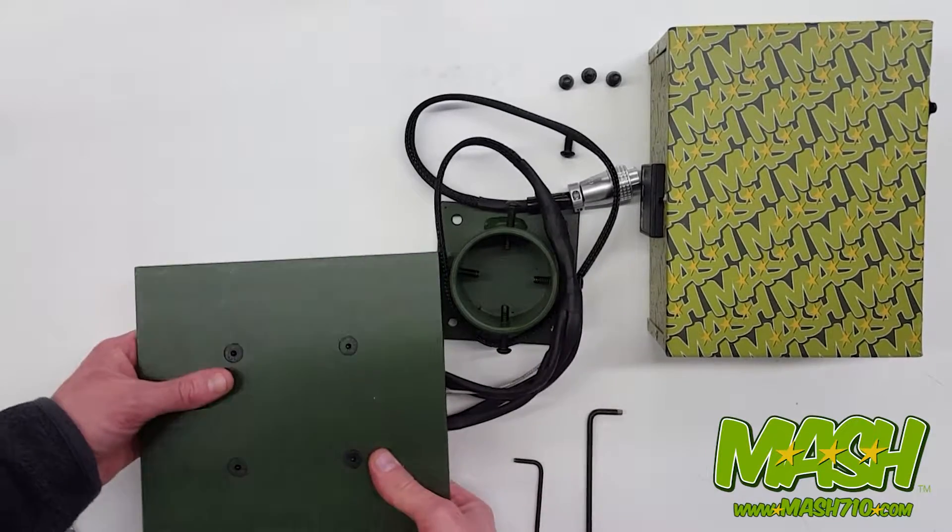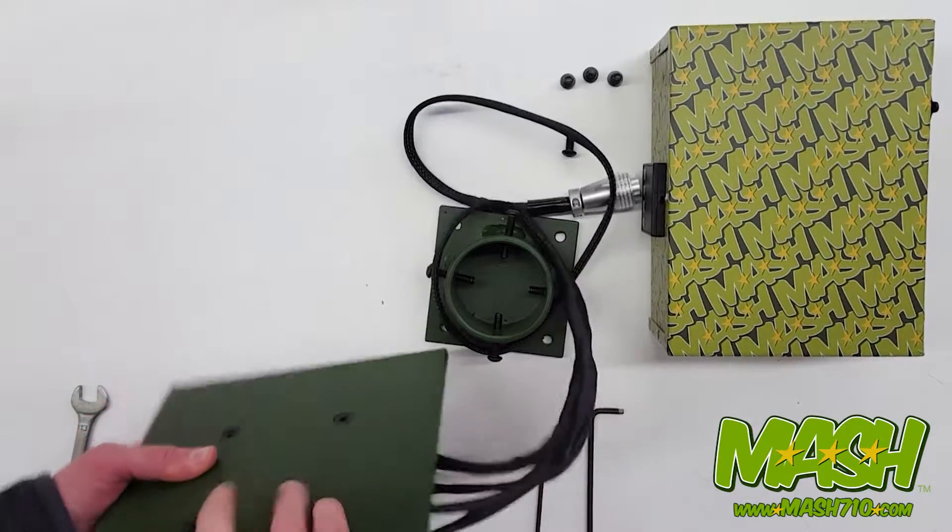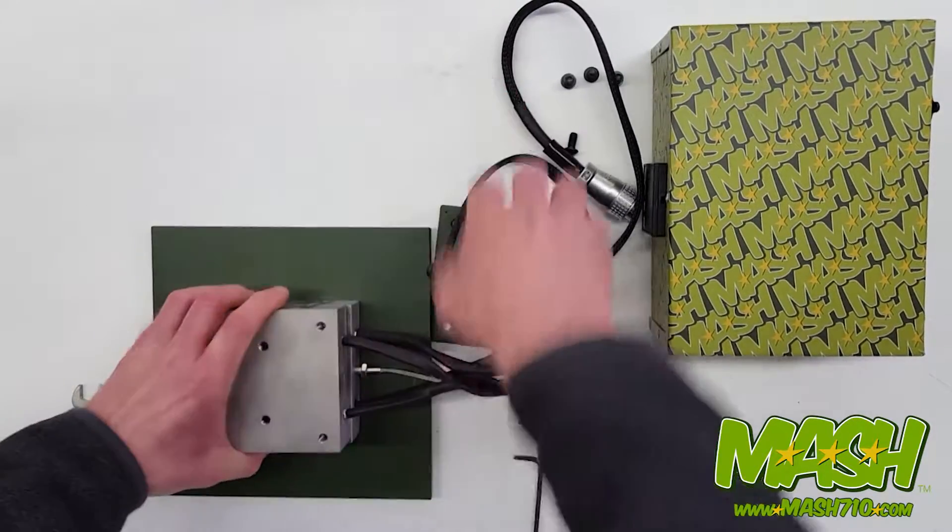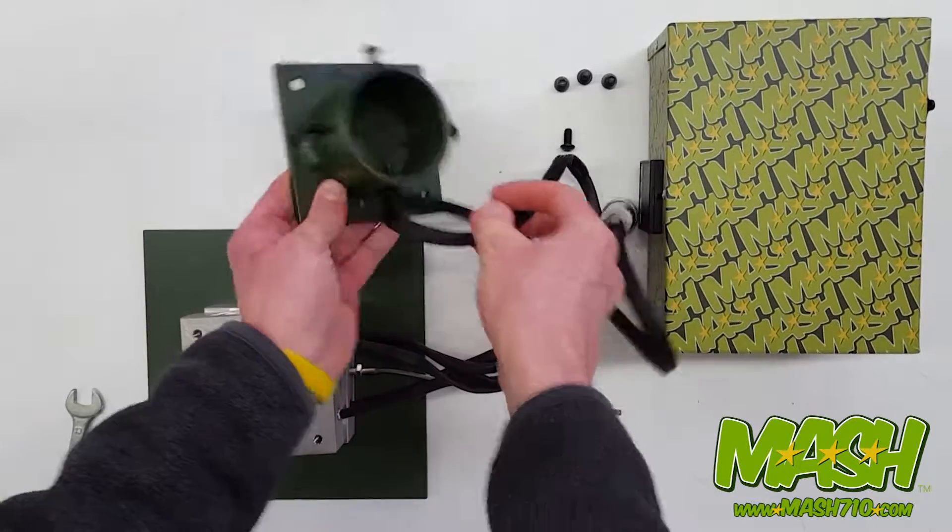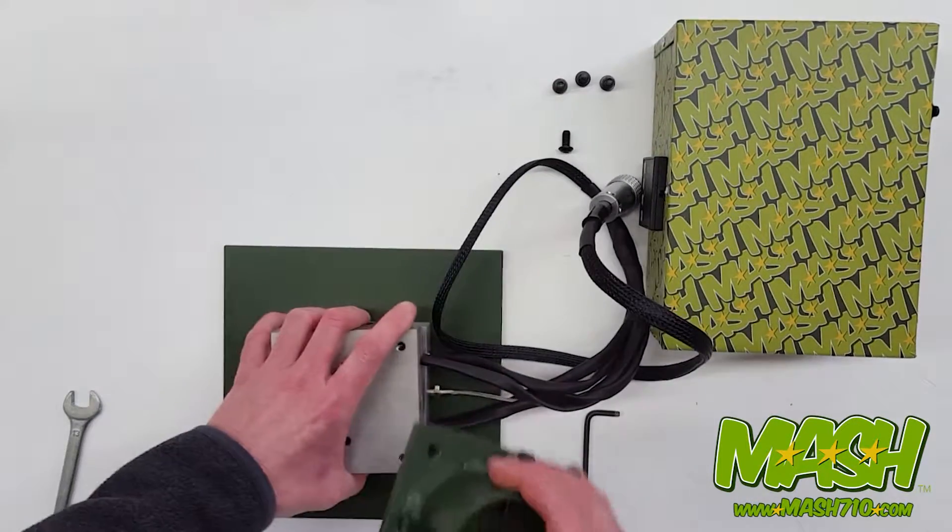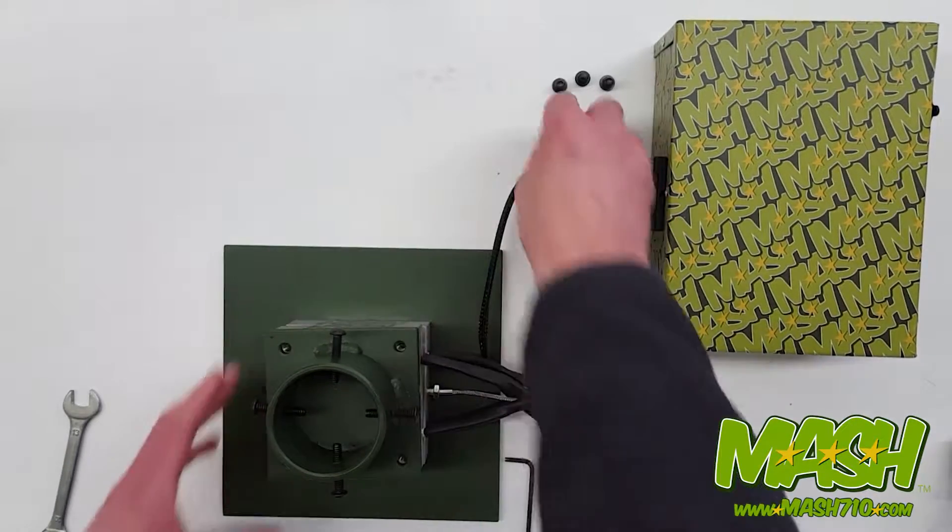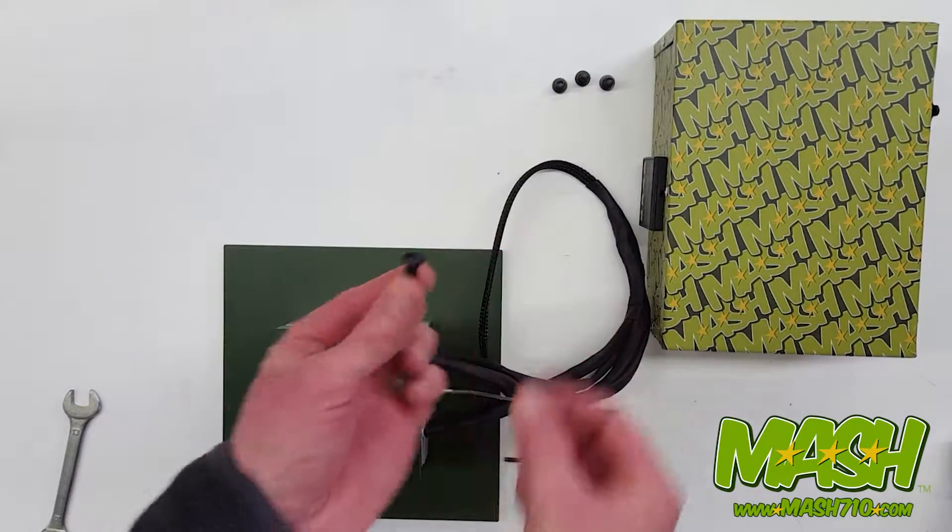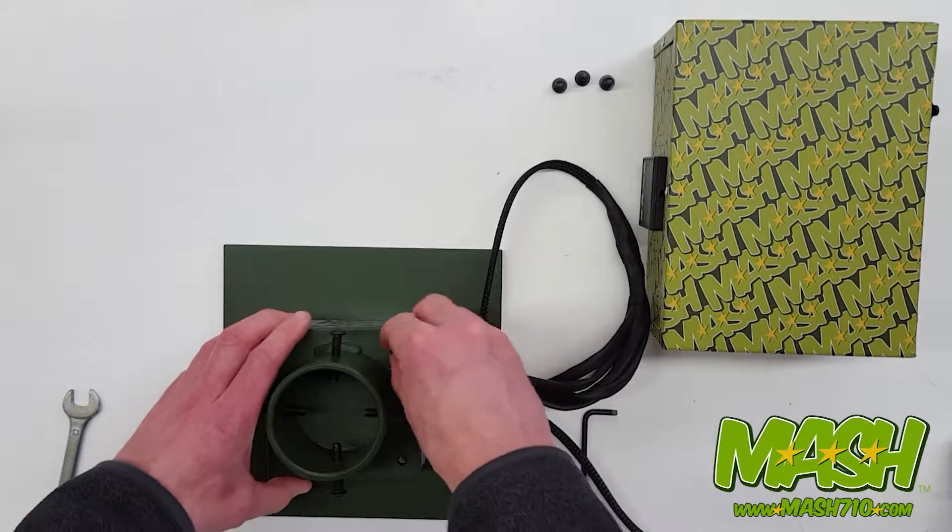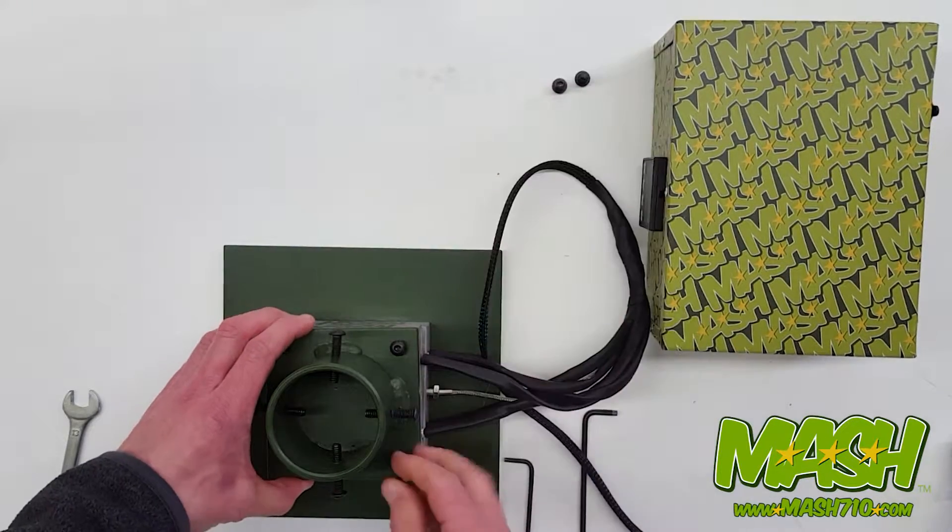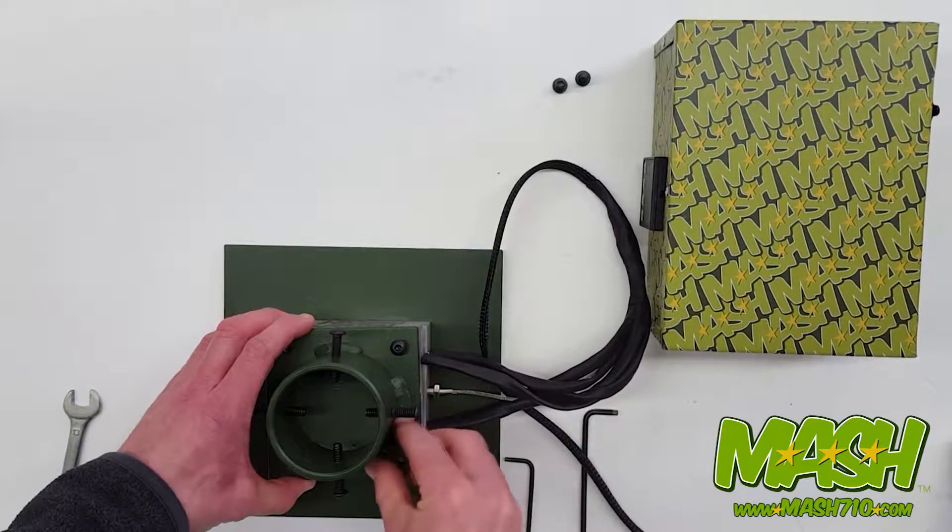And now carefully, grabbing both plates, flip the whole thing over. Take your collar, place it on top, line up the holes using the standard screws, screw them in by hand first.